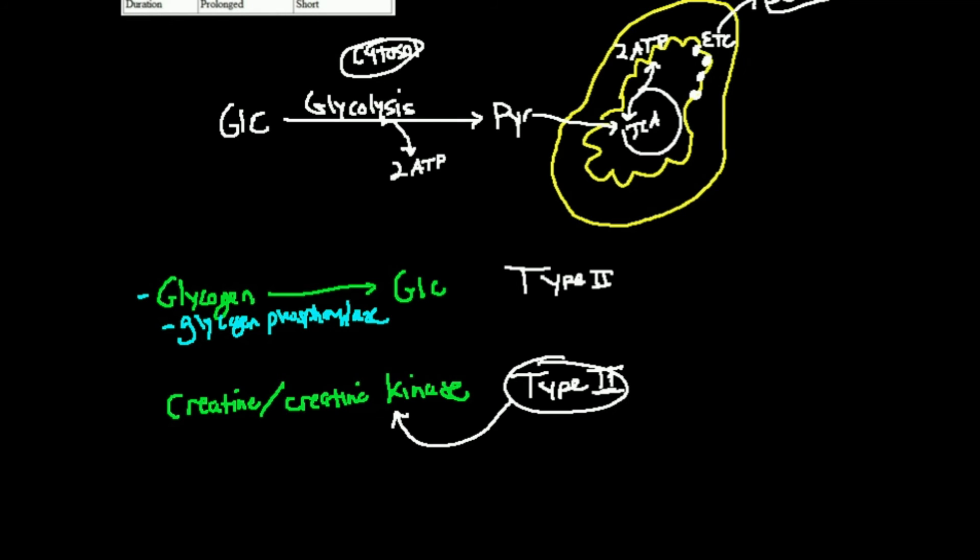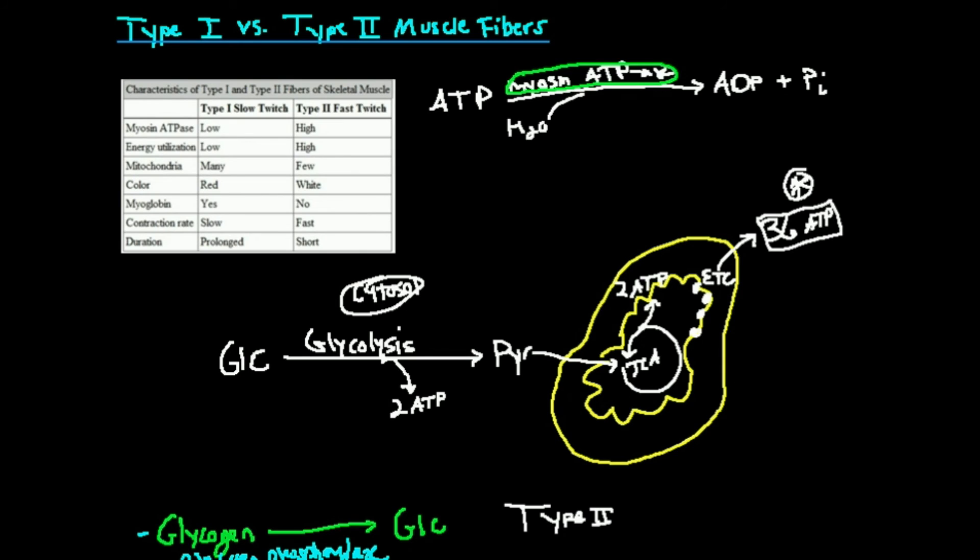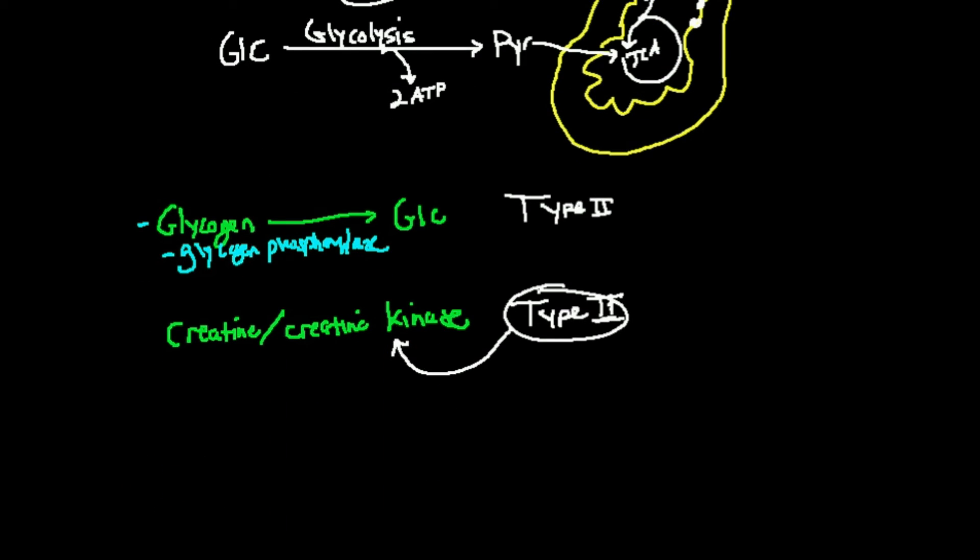Also, type 2 fibers have a much higher capacity to do glycolysis. Why? Because they have fewer mitochondria. So, if they're going to need to do more glycolysis, they're going to need to access glucose much more quickly. Therefore, they need more glycogen phosphorylase and need to store more glycogen. The glycogen can be broken down into glucose so that gives them higher access to glucose because they're not going to be able to do mitochondrial respiration as much because they have fewer mitochondria.